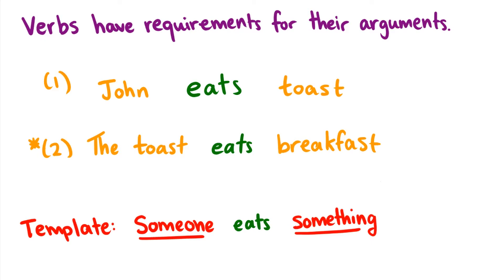For instance, in a sentence like John eats toast, the verbs have requirements for what the subject and object can be. John eats toast is okay because the person who is capable of eating is the subject, and the thing being eaten is the direct object. But in the toast eats breakfast, we have some issues.